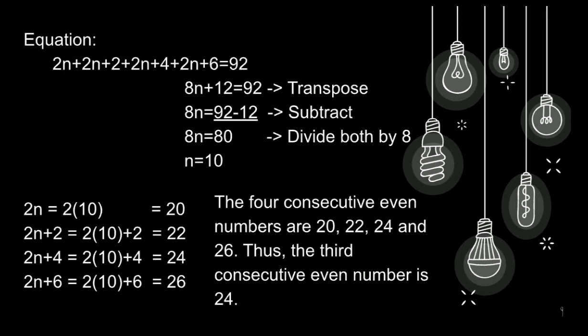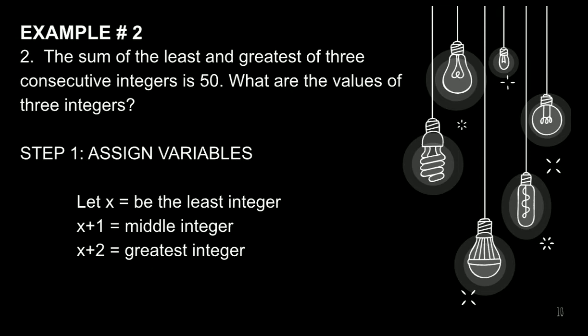Therefore, the 4 consecutive even integers is 20, 22, 24, and 26. Thus, the 3rd consecutive even integer is 24. Since, ang hinahanap naman dito ay ang katatlo na consecutive even integers.